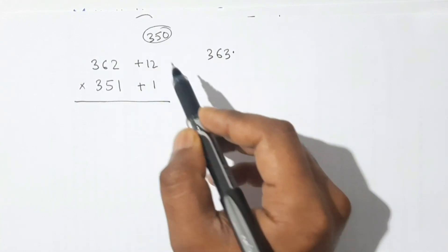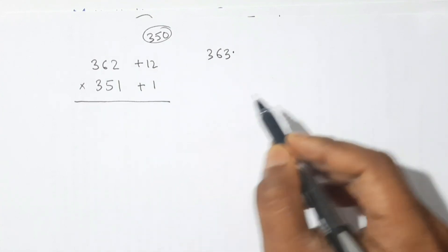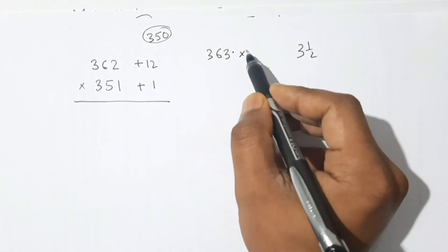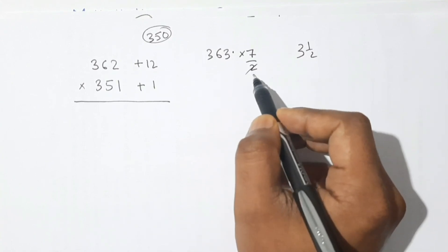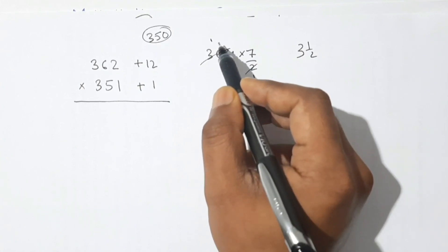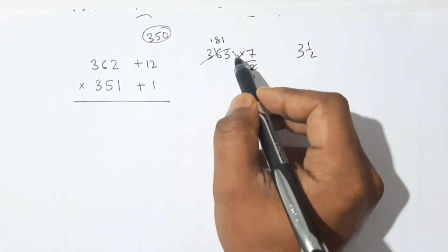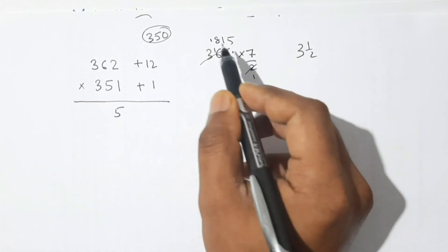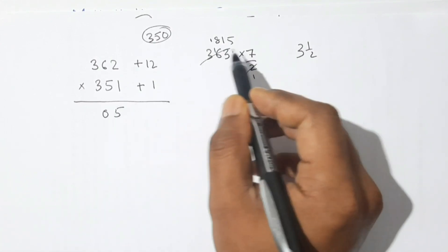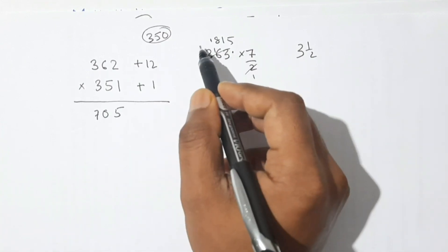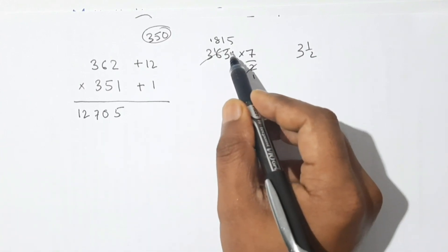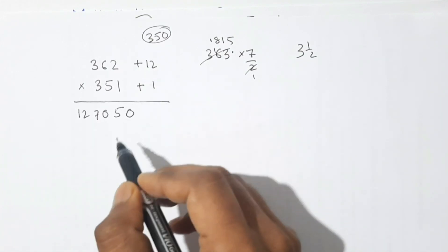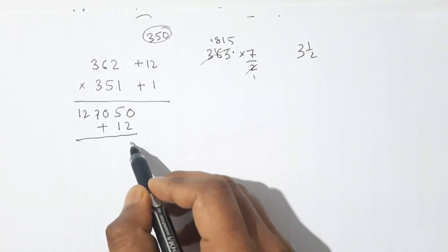Our base is 350, which is 3 and a half times 100 — in improper fraction that is 7/2. So we multiply 363 by 7/2. Multiply by 2: 2×363 = 726, then place two zeros to get 72600. Multiply by 7: 7×363 = 2541. Adding 2541 to 72600, we also account for the deviation product: 12 × 1 = 12.